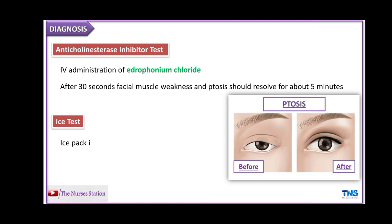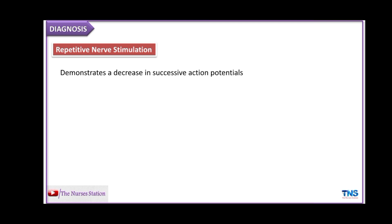The next is the ice test. An ice pack is placed over the patient's eye for one minute and the ptosis should resolve temporarily. The mechanism is the same — cold prevents the breakdown of acetylcholine by the cholinesterase enzyme. The next is repetitive nerve stimulation, which demonstrates a decrease in successive action potentials in the case of myasthenia gravis.